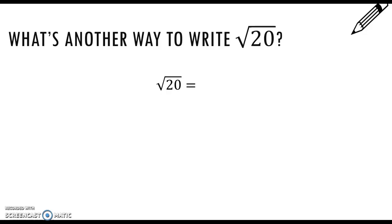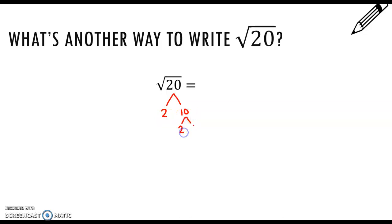So we talked about how the square root of 20 is not a nice number. What's another way to write the square root of 20? The way I would do this is similar to finding greatest common factor. We know that 20 is the same thing as 2 times 10, and 10 is the same thing as 2 times 5. So inside the square root, 20 is 2 times 2 times 5.